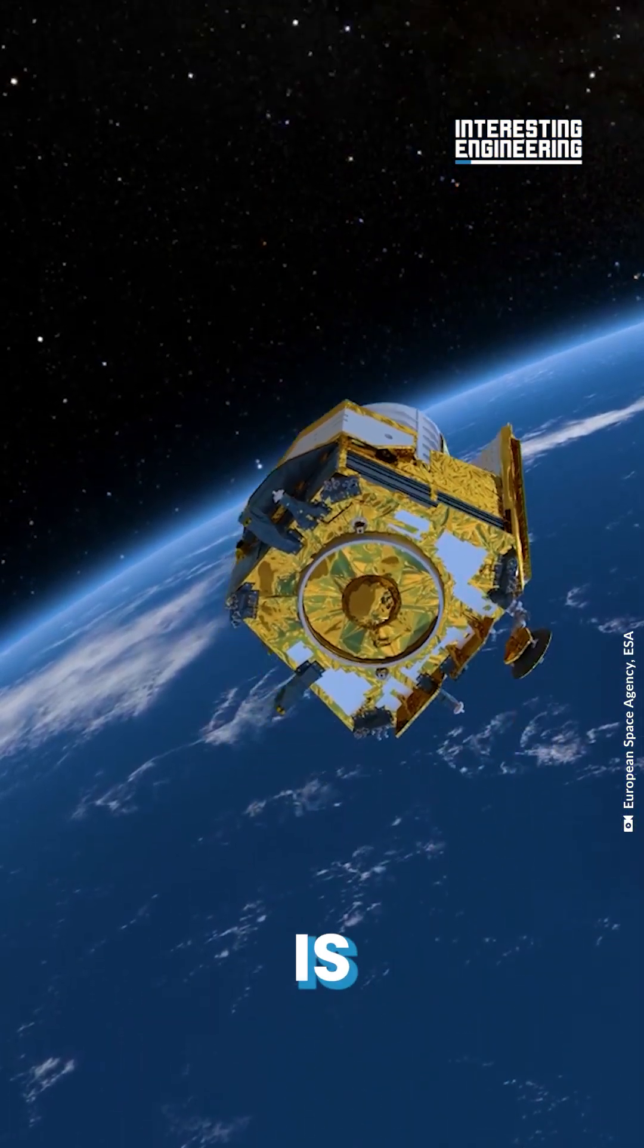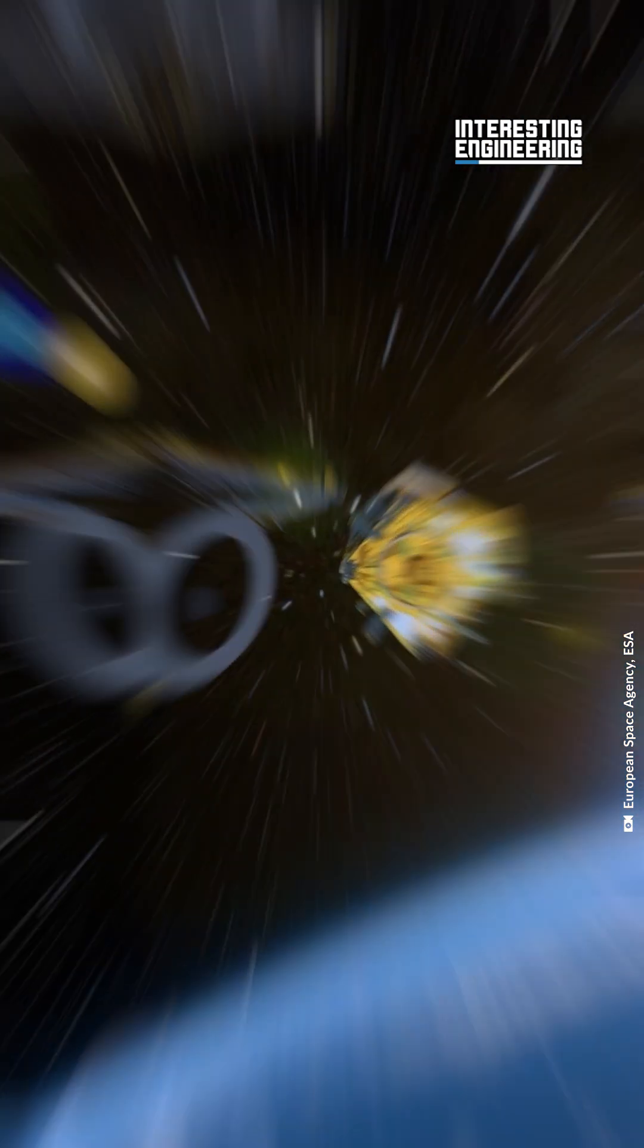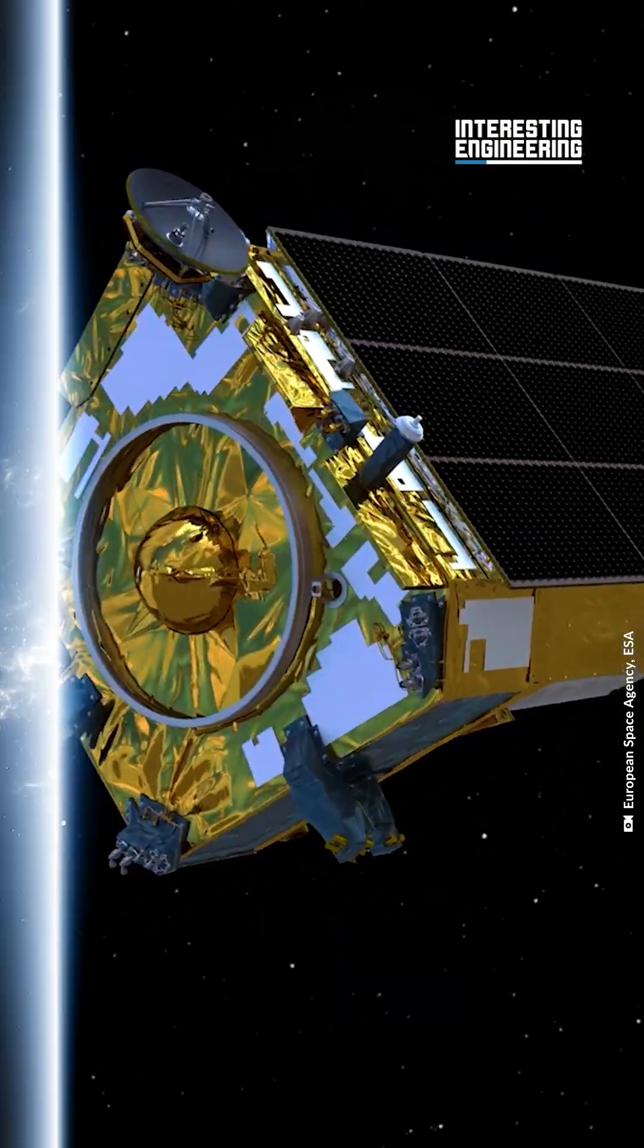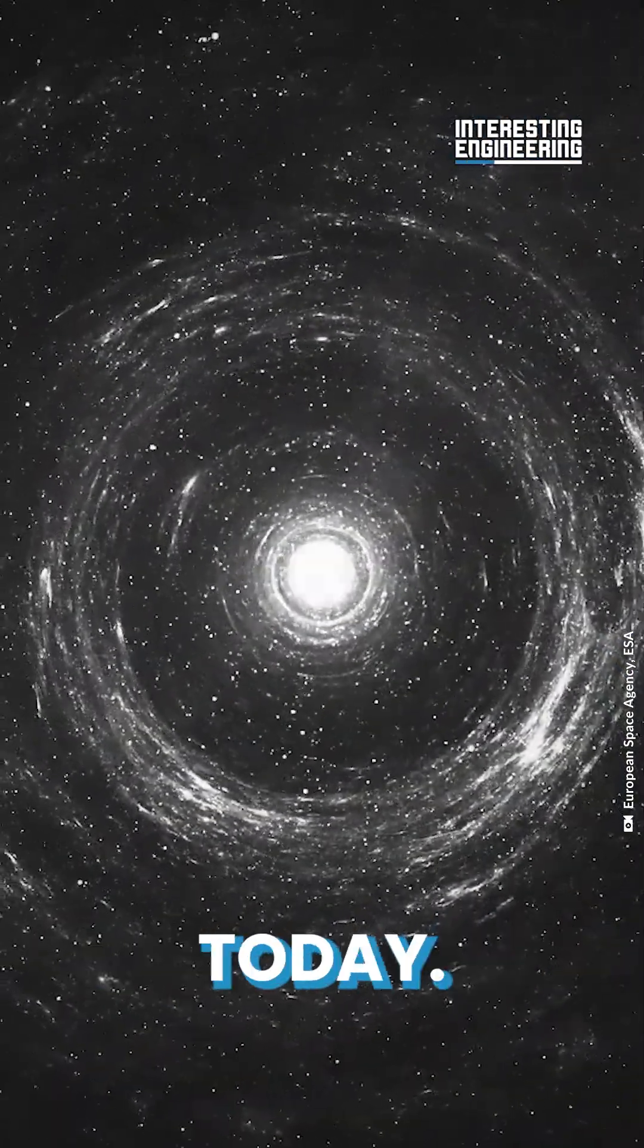The Euclid Space Telescope is a six-year mission to map the universe. In particular, it will investigate dark matter and dark energy. These are two of the most contentious questions in astrophysics today.